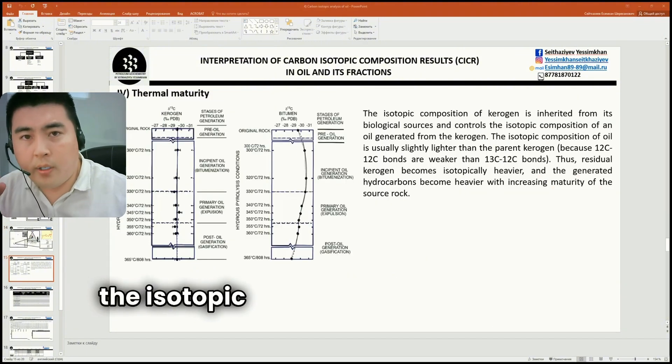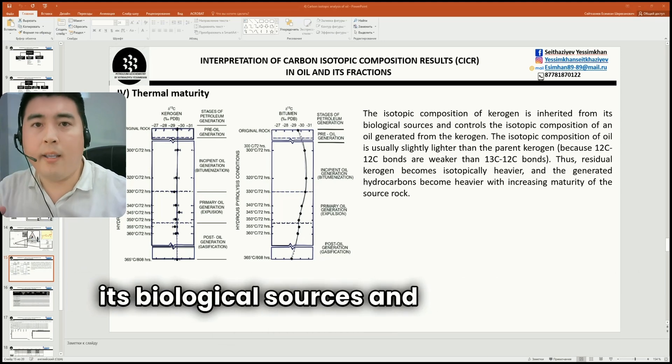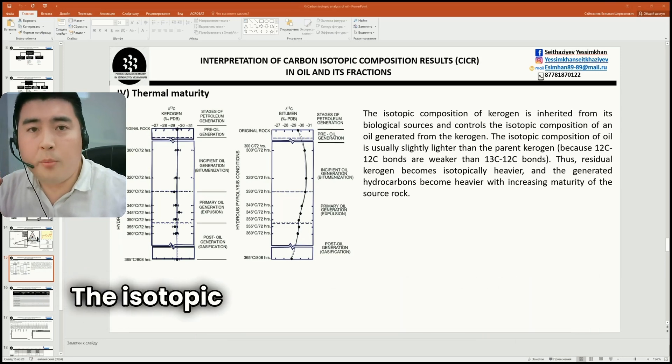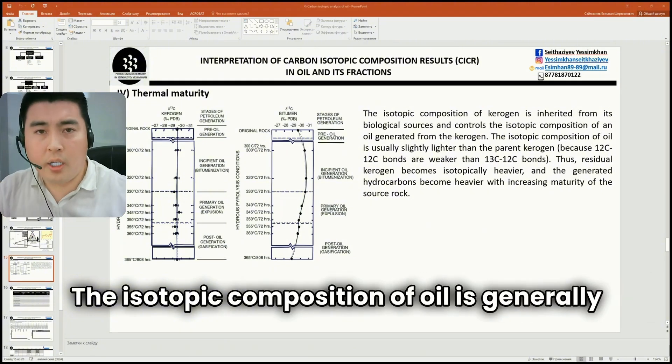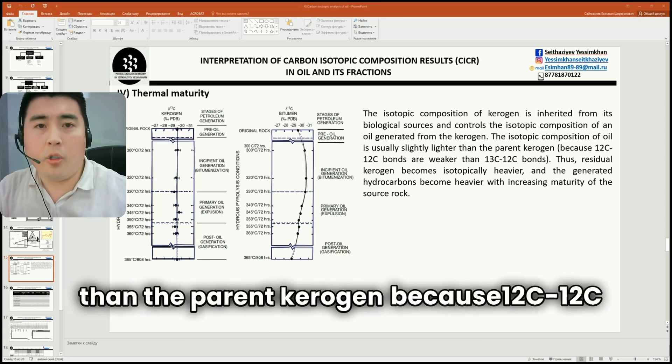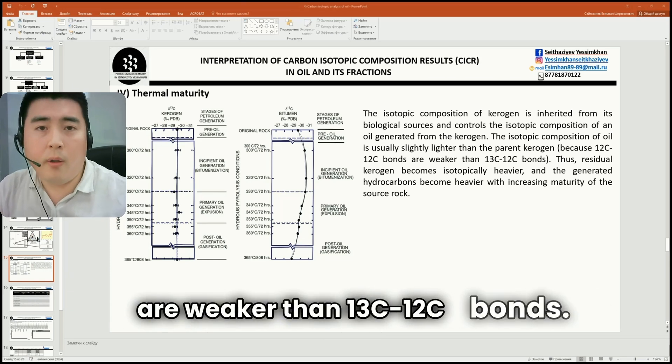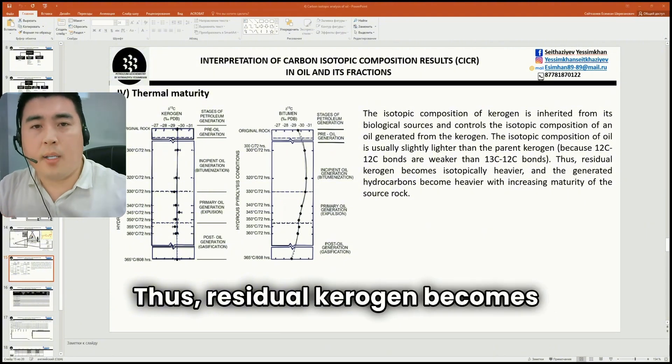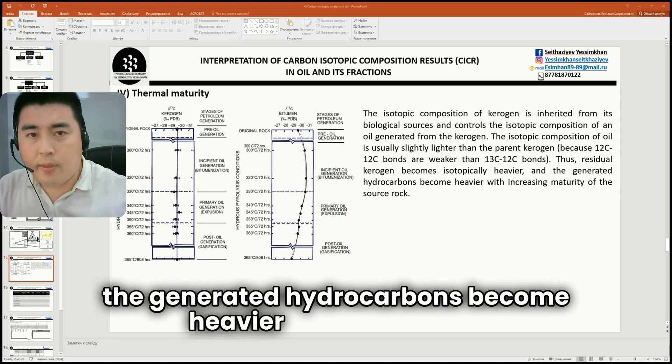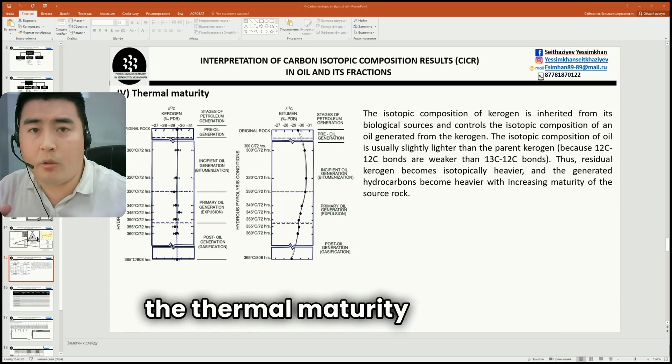The isotopic composition of kerogen is inherited from its biological sources and controls the isotopic composition of an oil generated from the kerogen. The isotopic composition of oil is generally usually slightly lighter than the parent kerogen because 12C-12C bonds are weaker than 13C-12C bonds. Thus, residual kerogen becomes isotopically heavier as the generated hydrocarbons become lighter with increasing maturity of the source rock. Therefore, it is possible to determine the thermal maturity of the oil.